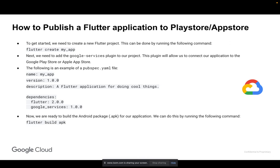Now we are ready to build the Android package, which is the .apk file for our application. We can do this by running the following command: flutter build apk. This command will build the Android package for our application and create an app-release.apk file in the build directory of our Flutter project.